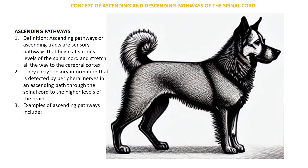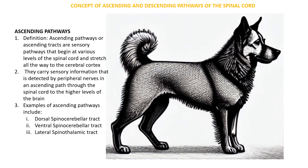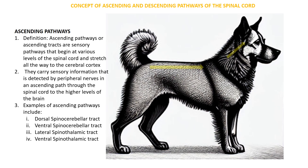Examples of ascending pathways include the dorsal spinocerebellar tract, the ventral spinocerebellar tract, the lateral spinothalamic tract, and the ventral spinothalamic tract. On this diagram, receptors in the skin pick up stimuli, which is transported to the spinal cord, and within the ascending tracts this information travels to the brain where it is interpreted, before feedback is sent back to effector organs through another pathway.